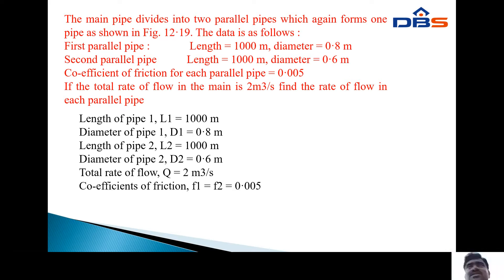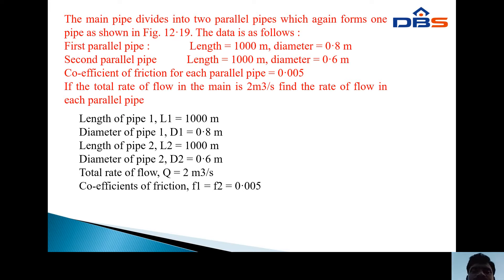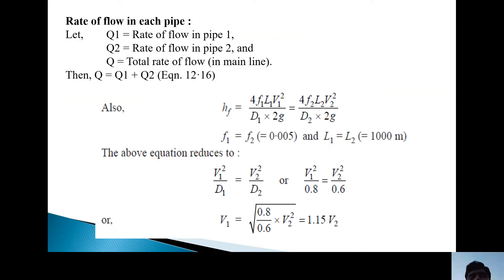First, read the problem, then write the given data. Length of pipe 1: L1 equals 1000 meters. Diameter of pipe 1: D1 equals 0.8 meters. Length of pipe 2: L2 equals 1000 meters. Diameter of pipe 2: D2 equals 0.6 meters. Coefficient of friction: F1 equals F2 equals 0.005 — F1 and F2 are same for both pipes.